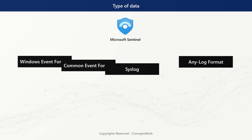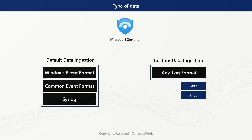Let's divide data ingestion into two categories: default and custom. When it comes to default data ingestion, anything available out of the box qualifies. I can install the AMA agent on a Windows or Linux machine and capture WEF format data, Common Event Format data, or Syslog data from either of those machines.